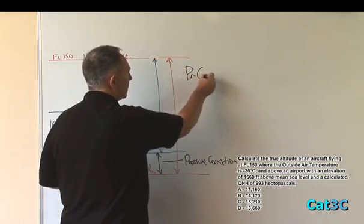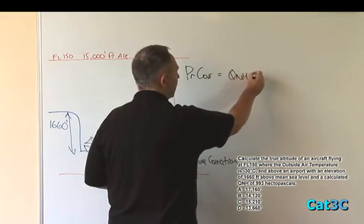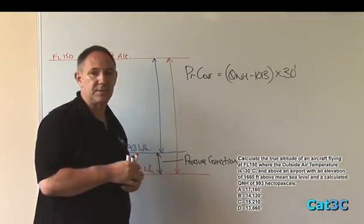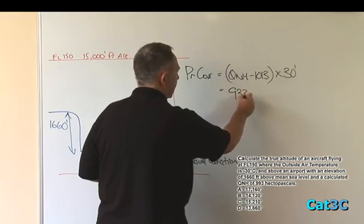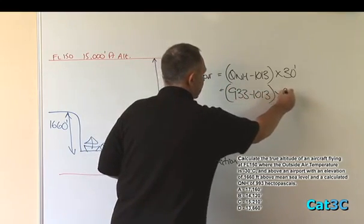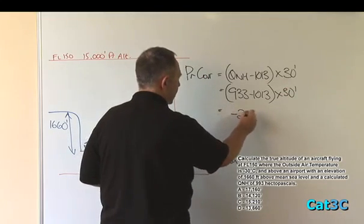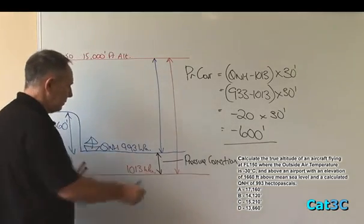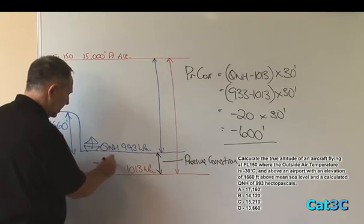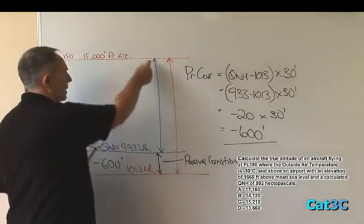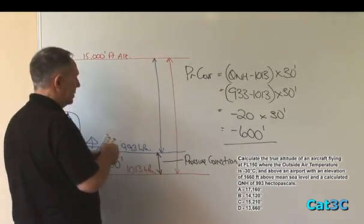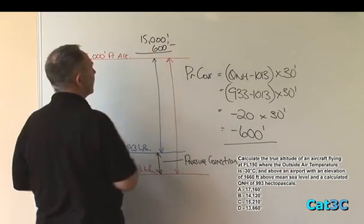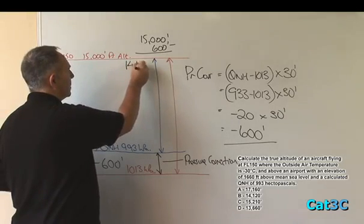Now, the pressure correction is equal to the QNH minus 1013 multiplied by 30 feet. And that's a standard unit that we use, 30 feet per hectopascal. Equals 993 minus 1013 times 30 equals minus 20 times 30 equals minus 600. So the pressure correction between sea level and the standard pressure datum is minus 600 feet. That tells me that the indicated altitude is going to be 600 feet less than the pressure altitude. So 15,000 minus 600 gives me an indicated altitude above sea level of 14,400 feet.